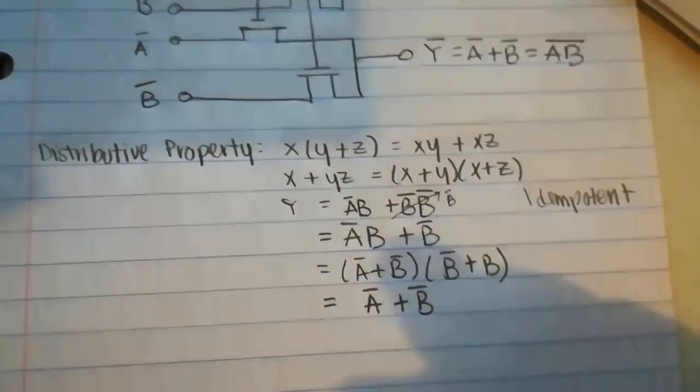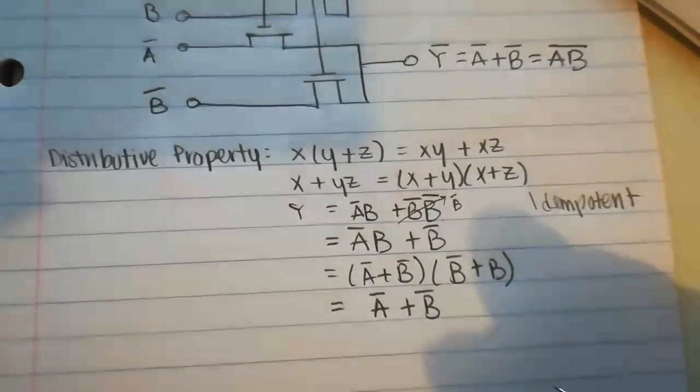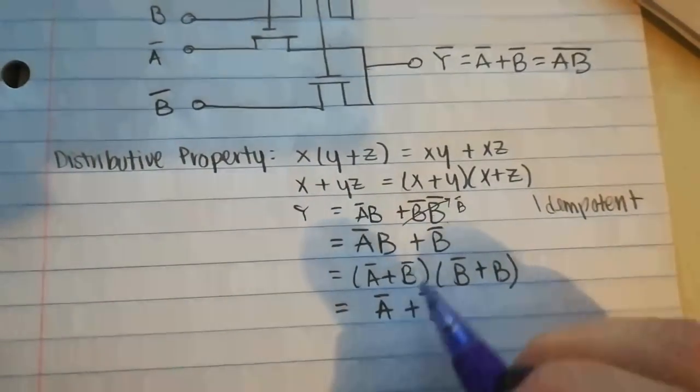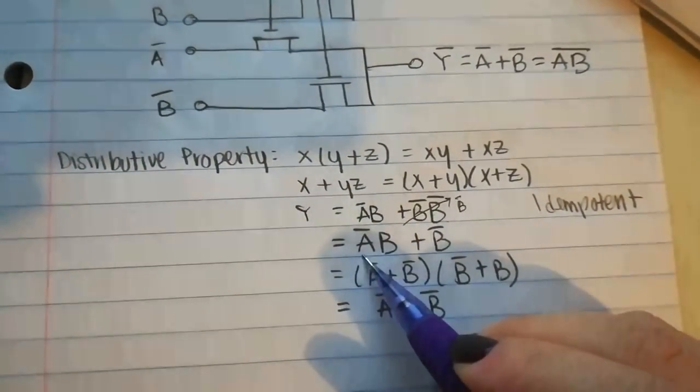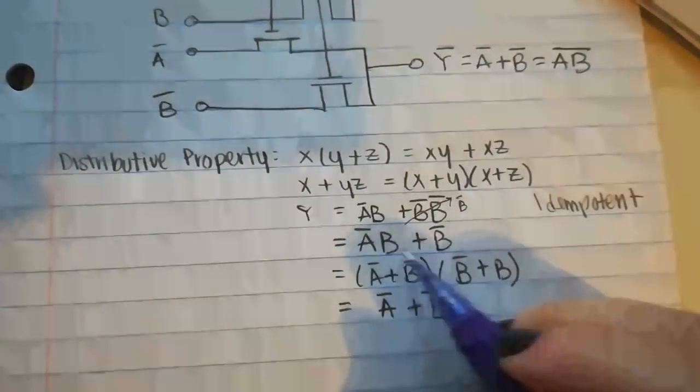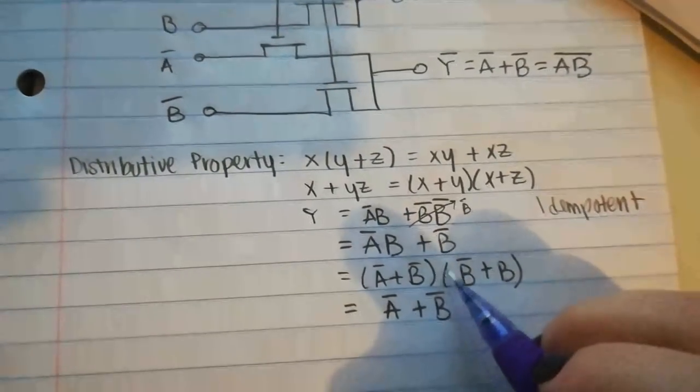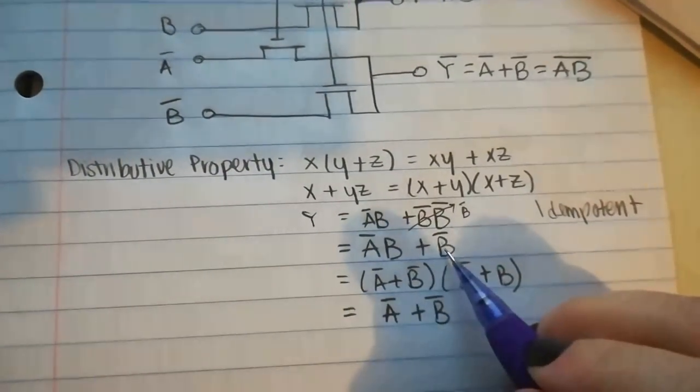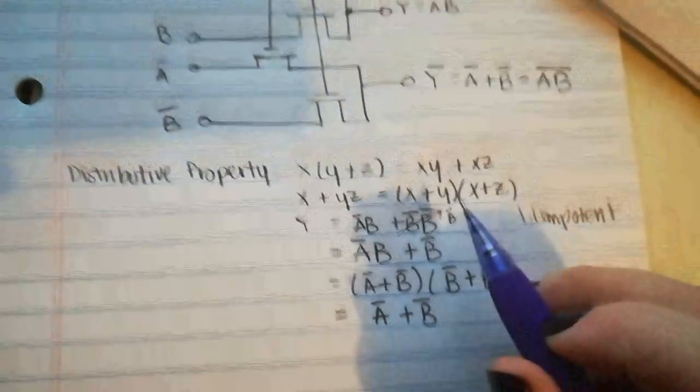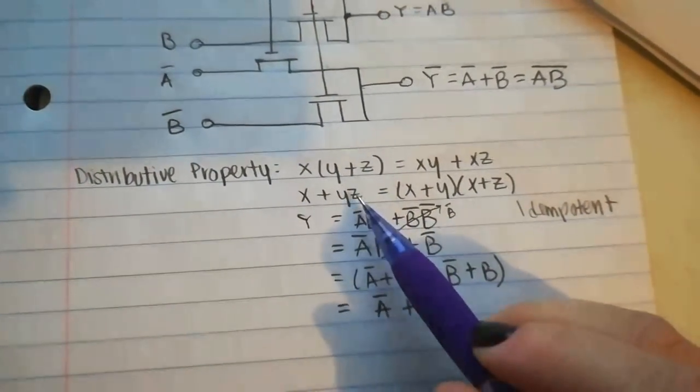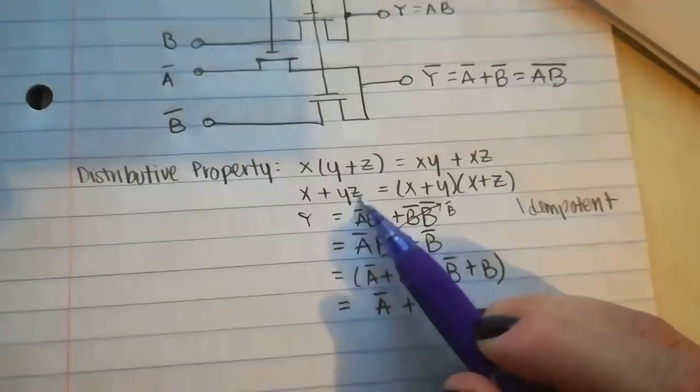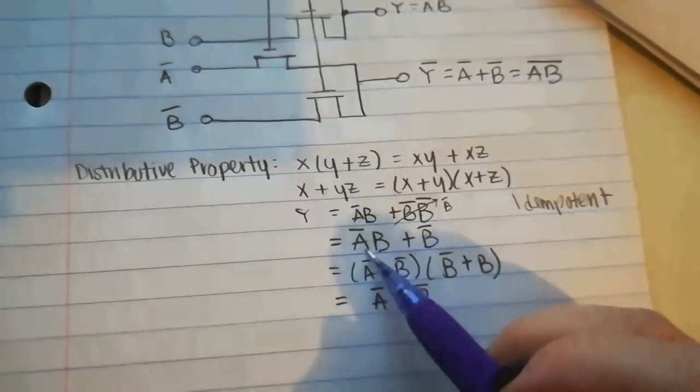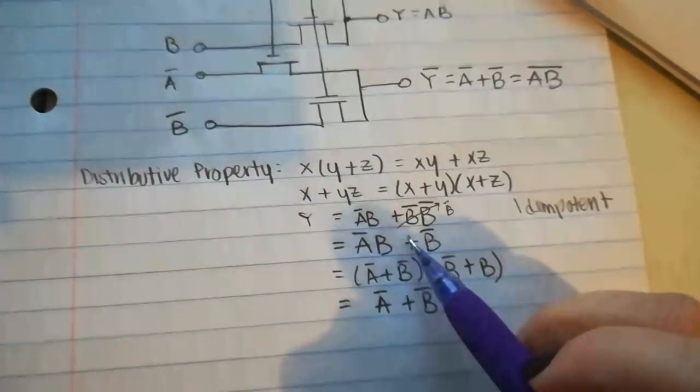So now I have Ā plus B from the previous step, plus B̄. And now I have this expression, which looks pretty similar to this one right here. So two variables here, two variables, one single variable here.